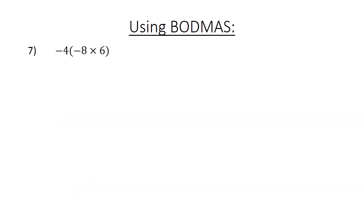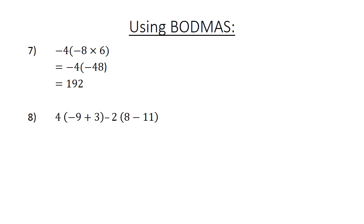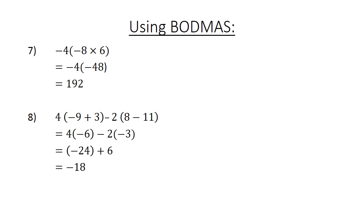Using bad math: negative 4 in brackets (negative 8 times 6), close brackets. Equals negative 4 times negative 48, equals 192. 4 in brackets (negative 9 plus 3), close brackets, minus 2 in brackets (8 minus 11), close brackets. First simplify your brackets: 4 in brackets negative 6, minus 2 in brackets negative 3. Now multiply: negative 24 plus 6, equals negative 18.